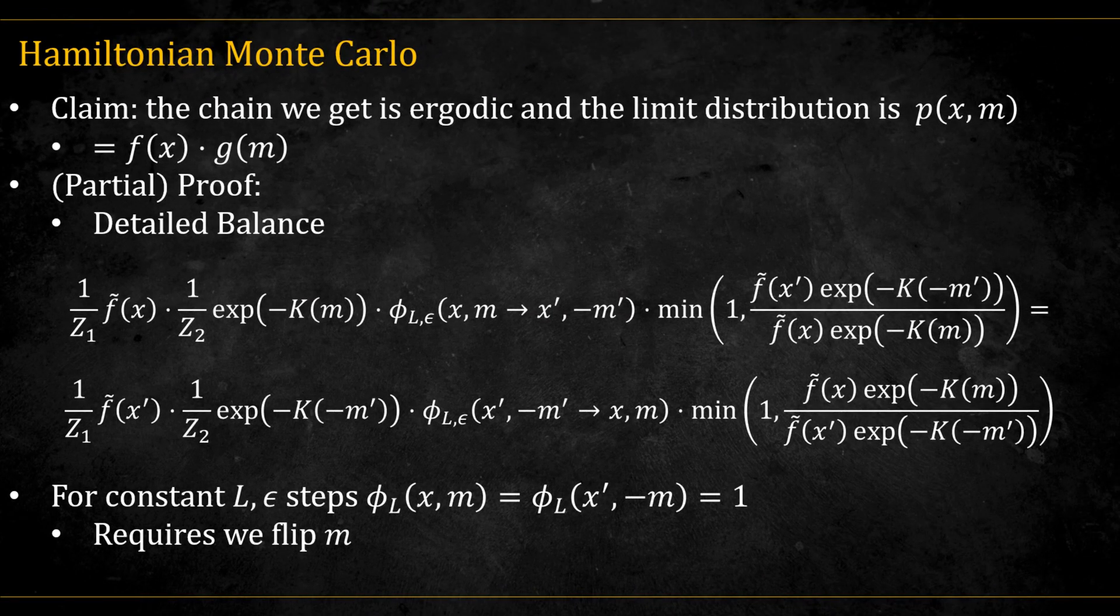Now let's sketch a hand-wavy argument for why this method actually produces samples from the target distribution. What we need to show is that the joint distribution is stationary, and that the chain is ergodic, meaning that samples from a single long run represent the true distribution. We'll first show detailed balance.